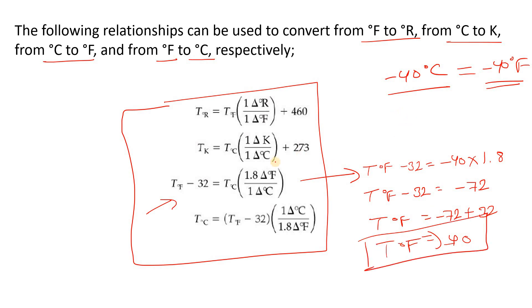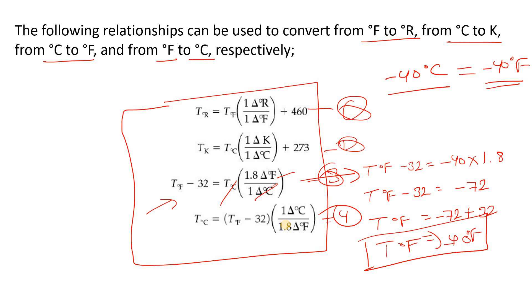I hope you understood this. When you put minus 40 degree Celsius into the formula, the Celsius terms cancel out and you get the degree Fahrenheit result. That's how you can calculate using these four conversion relations. I hope you understood the relationship between all the temperature scales and what is the meaning of temperature. If you have any doubts please let me know in the comments box and I will give a reply as soon as possible. That's all for today's video. Thanks for watching — keep learning. Thank you.